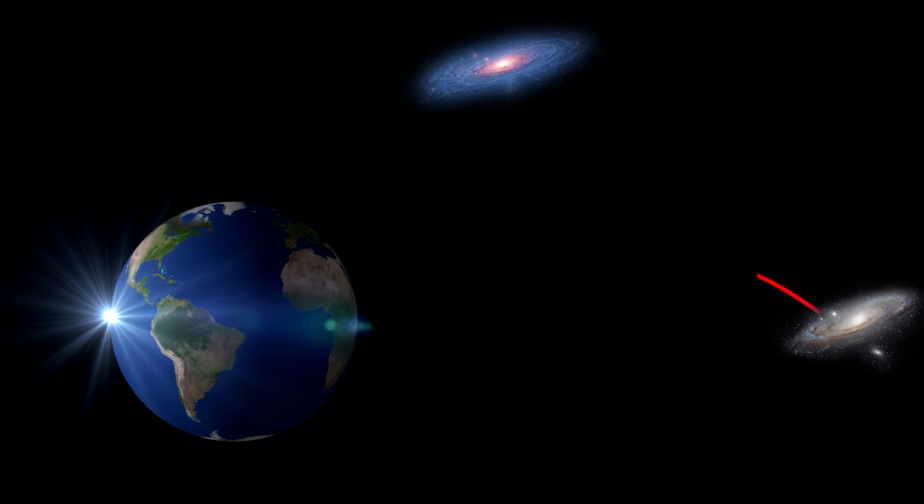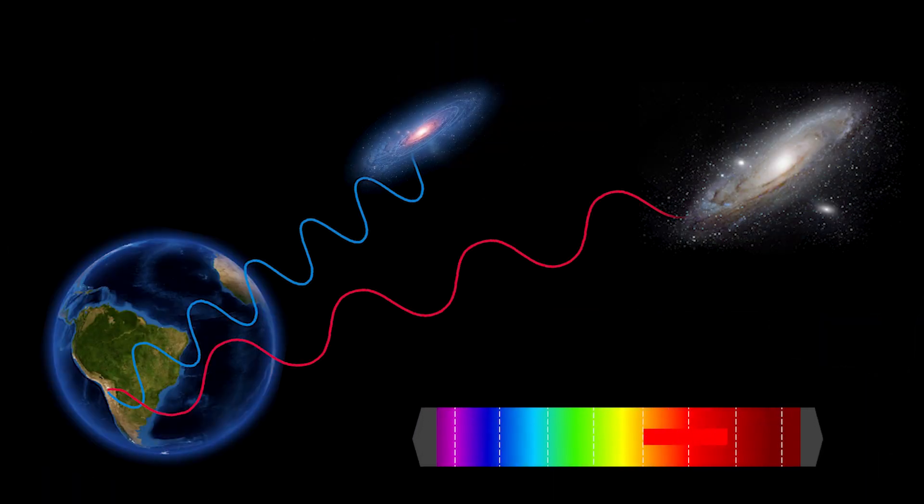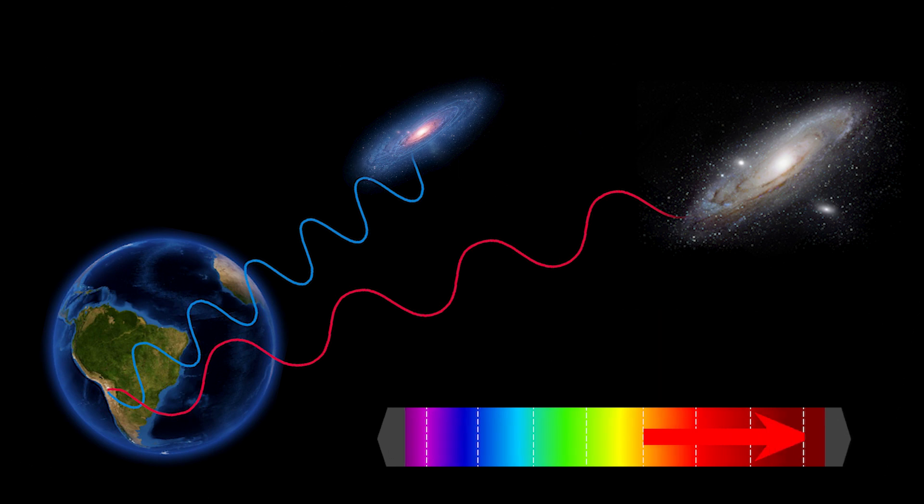He found that the light coming from two galaxies located near and far away from Earth isn't the same. The light coming from a galaxy farther away from Earth is more shifted towards the red spectrum than a nearer one.